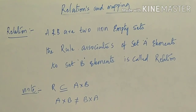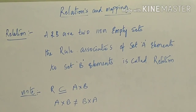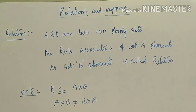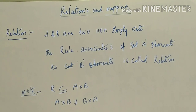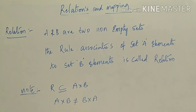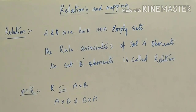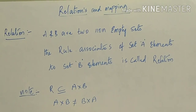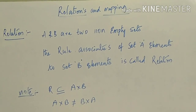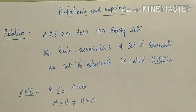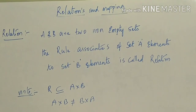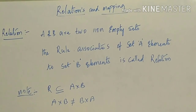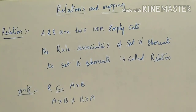Next: definition of relation. A and B are two non-empty sets. The rule that associates elements of set A to elements of set B is called a relation. So R is a relation, and R is a subset of A × B. Note that A × B is not equal to B × A.